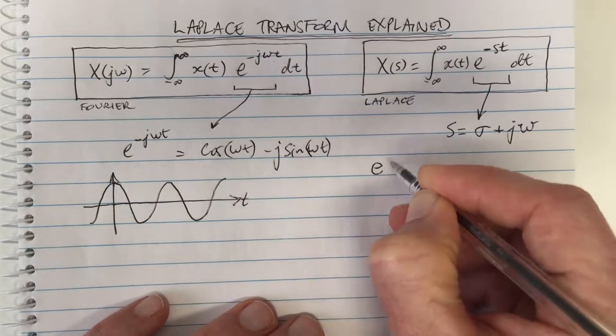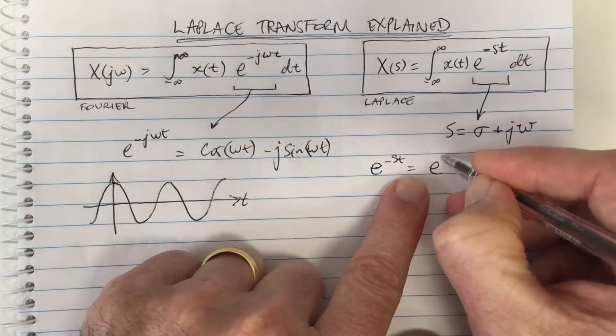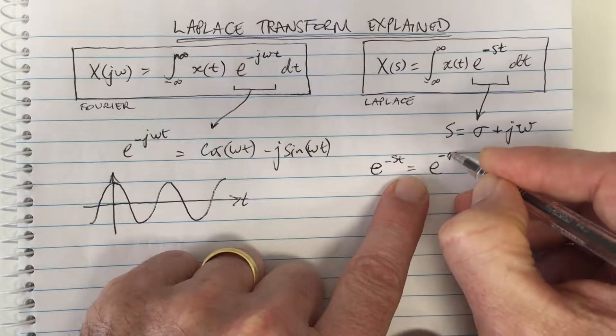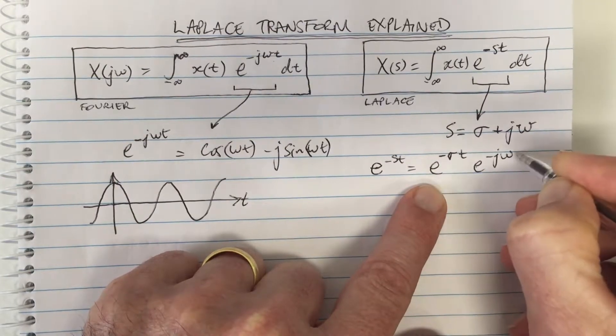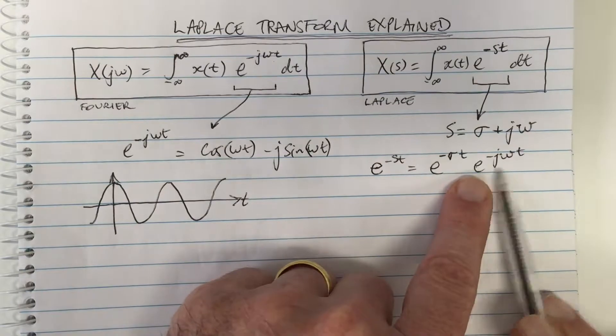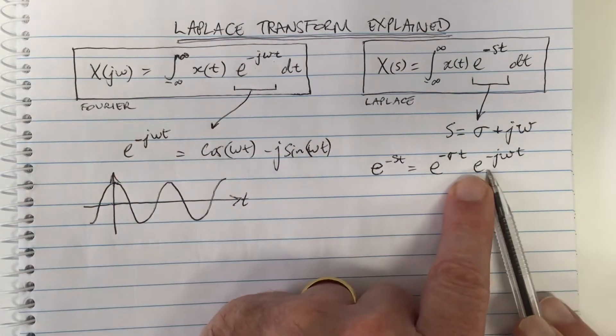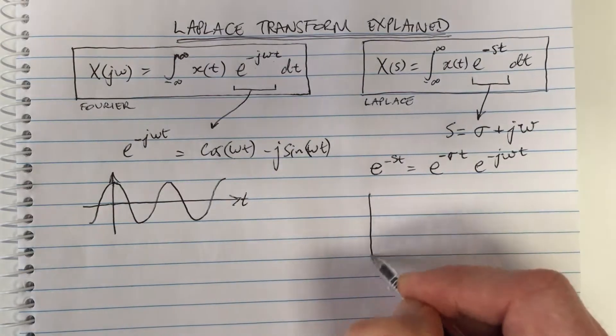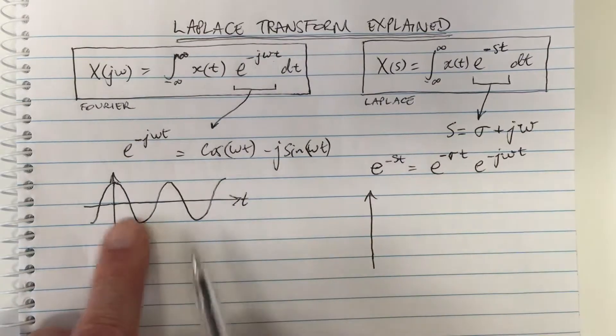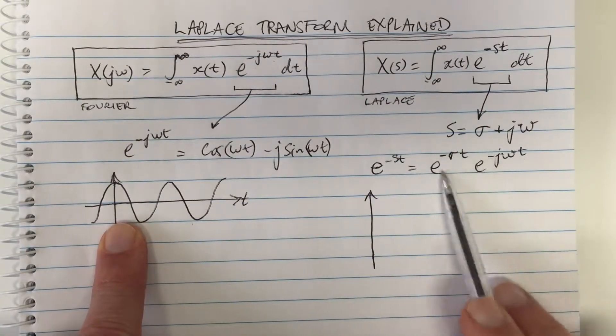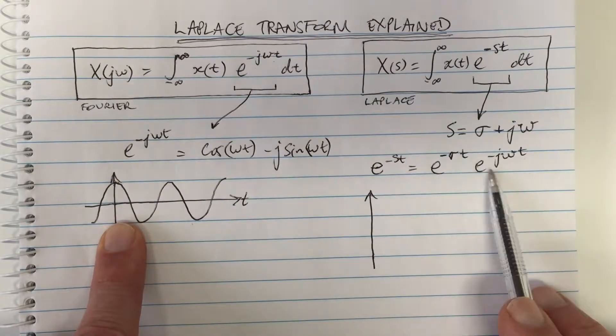Let's look at this: e^(-st) equals e^(-σt) times e^(-jωt). And e^(-jωt) is what we had with the Fourier transform. So if we think in function space, this is now allowing us to have functions which are that basis function multiplied by this exponential term.